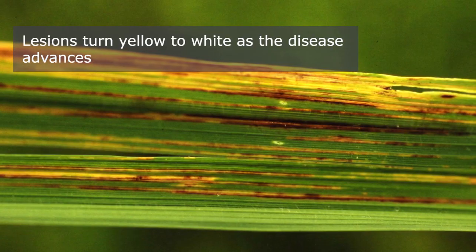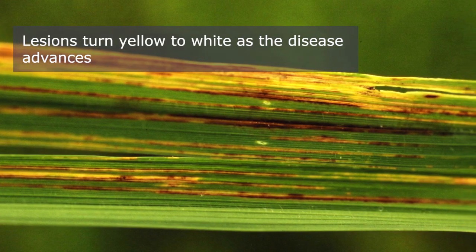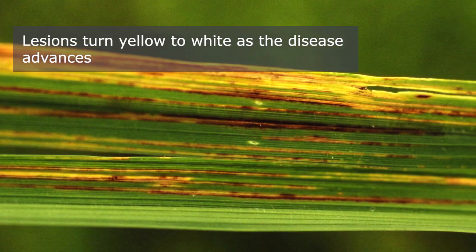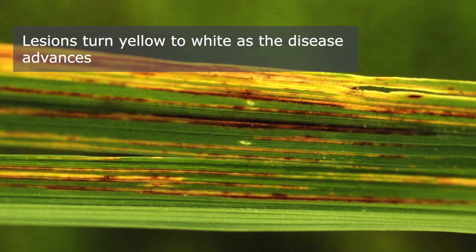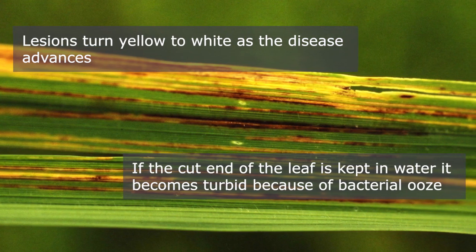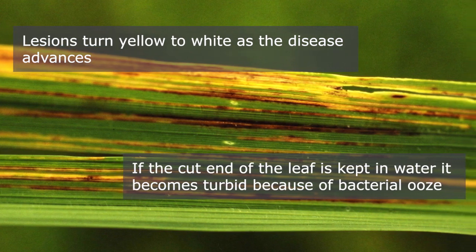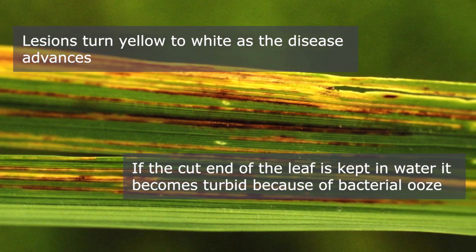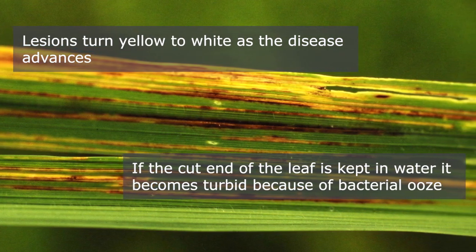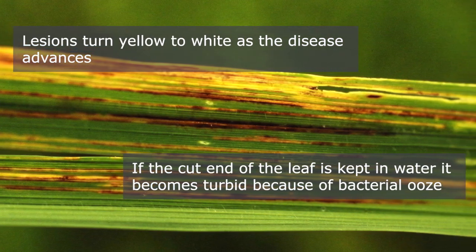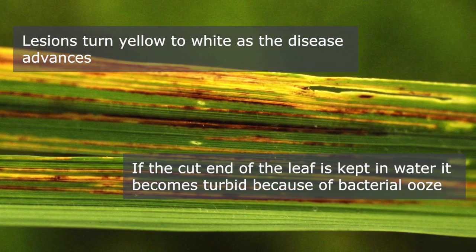Lesions turn yellow to white as the disease advances. If the cut end of the leaf is kept in water, it becomes turbid because of bacterial ooze.